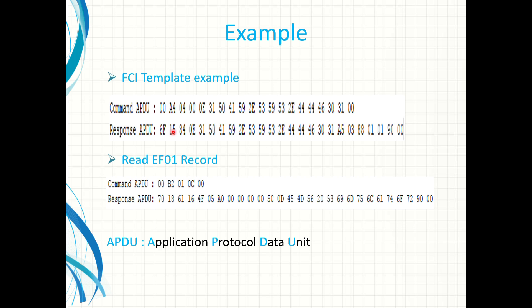Here is a response example of an FCI template, that is a file control information template. It has the tag 6F. The length is 15 hex and that is 21 bytes. If you count you will notice that the last two bytes are not within the 21.